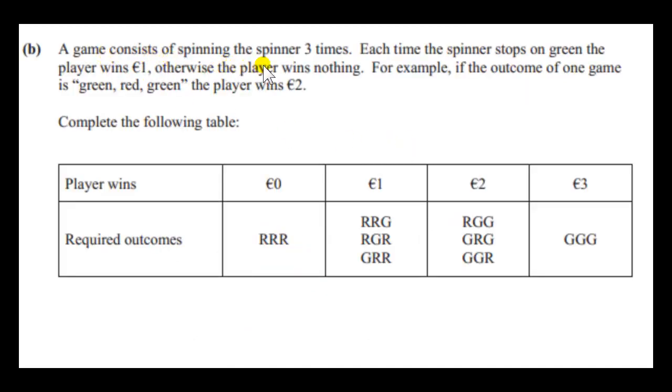A game consists of spinning the spinner three times. Each time the spinner stops on green, the player wins one euro. Otherwise, the player wins nothing. For example, if the outcome of one game is green, red, green, the player wins two euros. So now we want to complete this table. So, the spinner is spun three times. For the player to win zero euros, those three spins must be red. If the pointer points to red, the player wins nothing. So to win nothing in a full game, the pointer must point to red three times.